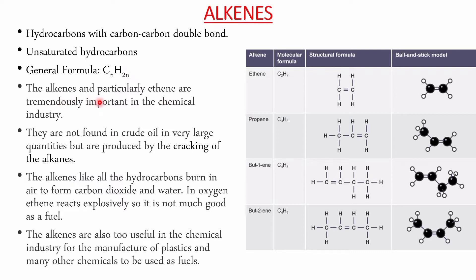Alkenes are unsaturated molecules with the general formula CnH2n. These compounds are very important from a chemical industry point of view. They are mainly used to make polymers, such as polythene.